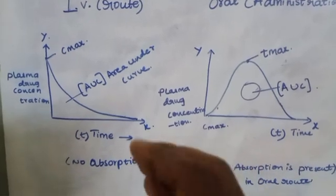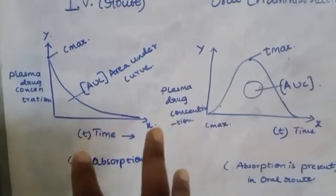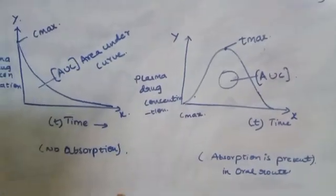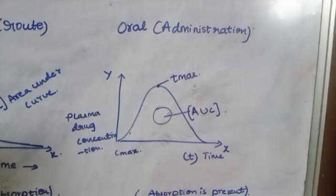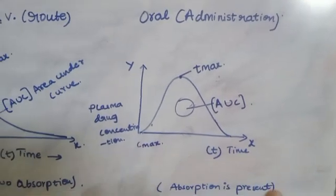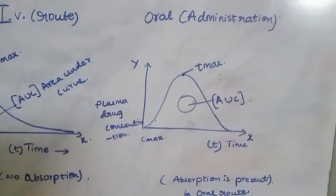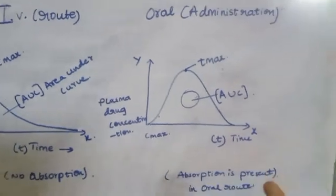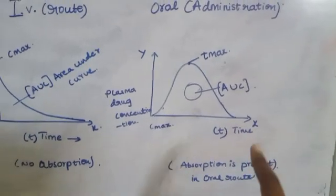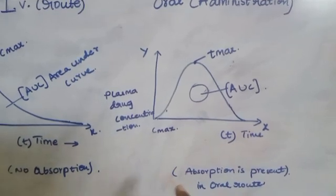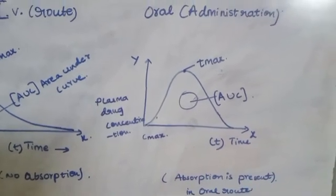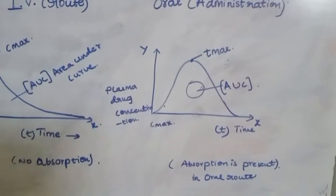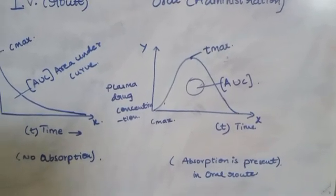The area under curve is the key structural representation. Remember, there is no absorption for IV. For oral administration, we take a single dose. The routes are different — IV versus oral — plotted on the same time and plasma drug concentration axes. For oral, absorption is definitely present, followed by distribution, metabolism, and elimination.